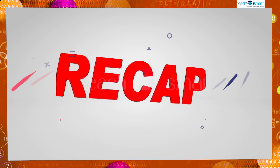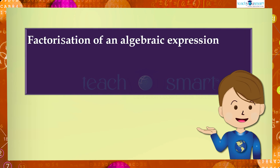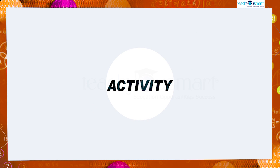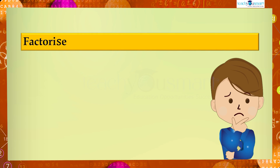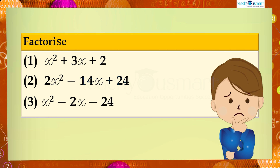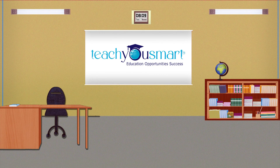Let's recall what we discussed today: factorization of an algebraic expression using the identity (x + a)(x + b) = x² + (a + b)x + ab. Before winding up, let's check how much you understood with an activity. Factorize: (1) x² + 3x + 2; (2) 2x² − 14x + 24; and (3) x² − 2x − 24. That's all for now — see you in the next class!